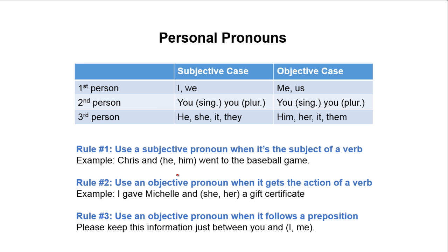Let's go over this table. First person — whenever the speaker is involved — subjective case: I, we; objective case: me. Second person — whenever you're speaking directly to someone — subjective case: you (singular), you (plural); objective case: you (singular), you (plural). Notice that second person subjective and objective case are the same. Third person — whenever you're speaking about someone or something — subjective case: he, she, it, they; objective case: him, her, it, them. Note that 'it' also goes both ways.